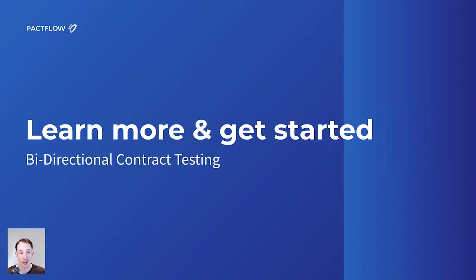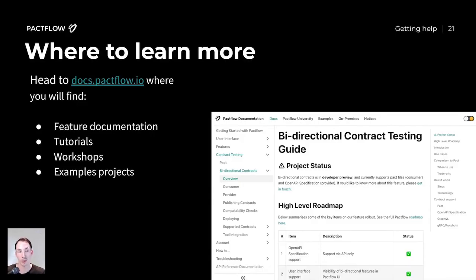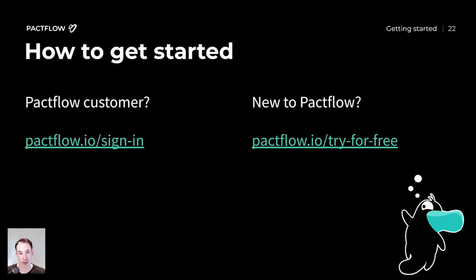Now that you've seen the feature in action, how can we learn more and get started? Head to docs.pactflow.io where you'll find a bunch of information about this feature, including feature documentation, hands-on tutorials and labs, detailed workshops, and example projects you can use as guides to run it on your own project. If you're an existing Pactflow customer, head to pactflow.io/sign-in to log in, or head to your tenant domain. If you're new to Pactflow, head to pactflow.io/try-for-free, create a new account — it's free forever and you have up to five integration points to test.